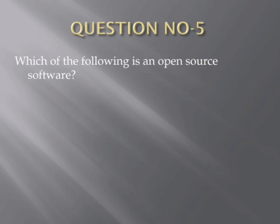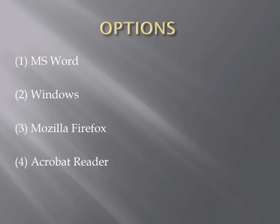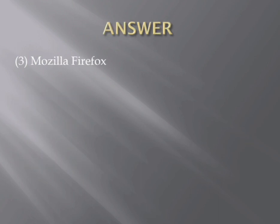Question number five. Which of the following is an open source software? Options: (1) MS Word, (2) Windows, (3) Mozilla Firefox, (4) Acrobat Reader. The correct answer is the third one — Mozilla Firefox.